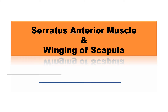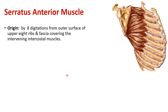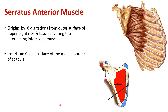This video is on the serratus anterior muscle and winging of scapula, which occurs because of paralysis of the serratus anterior muscle. The origin is by 8 digitations from the upper 8 ribs, their outer surface and from the fascia which covers the intercostal muscles attached on these ribs. The insertion of the serratus anterior is along the medial border of the scapula on its costal surface.